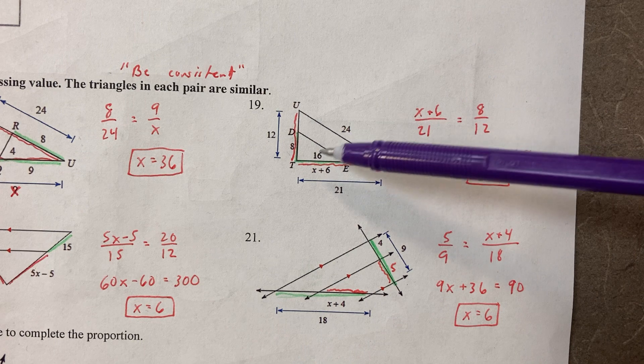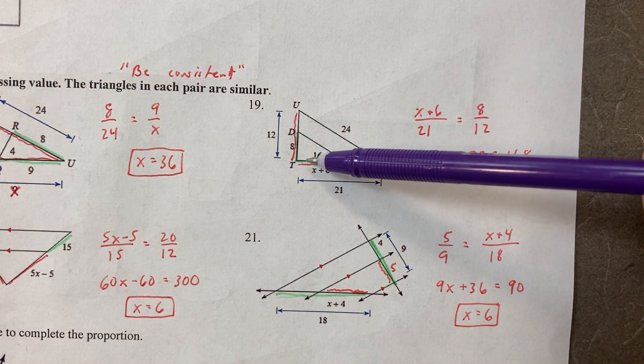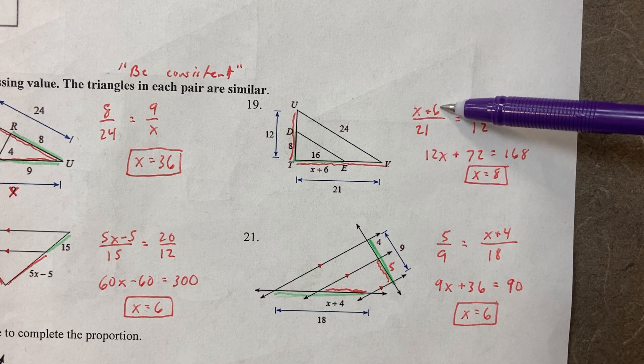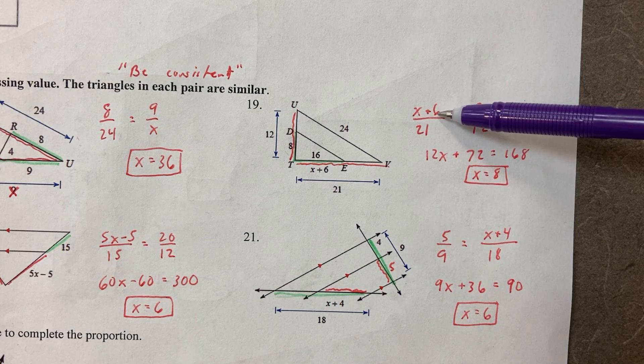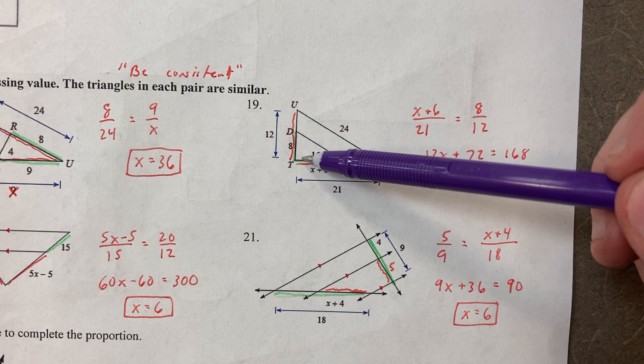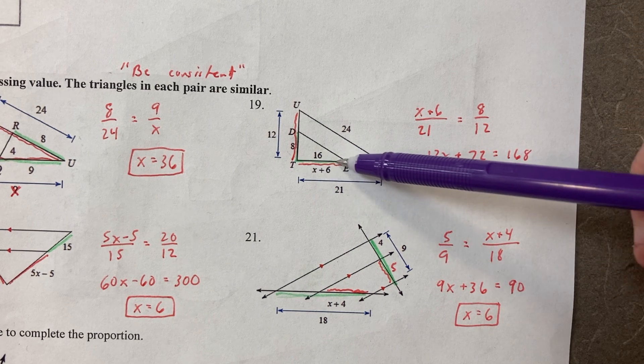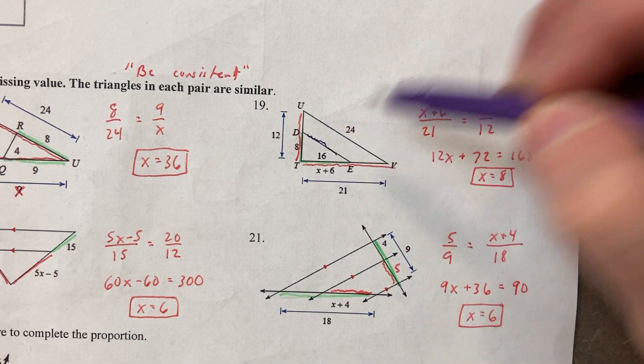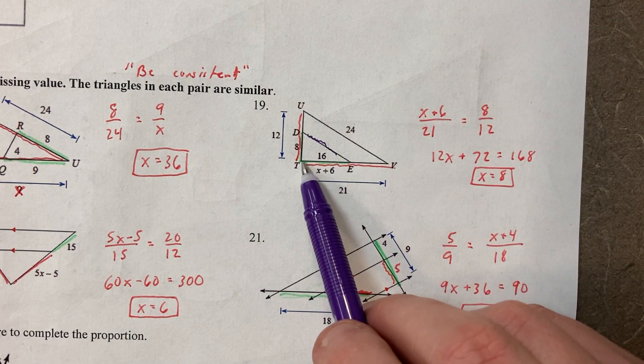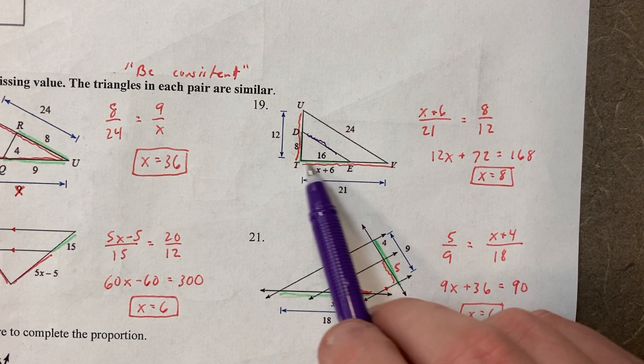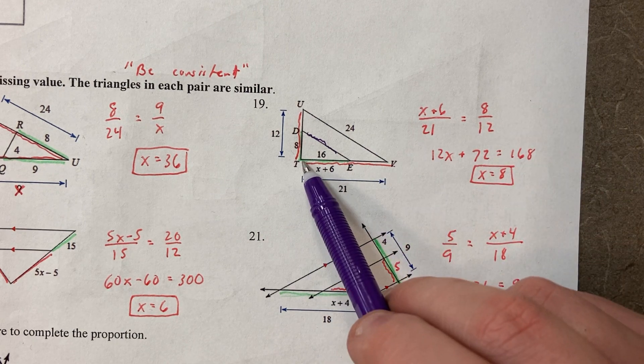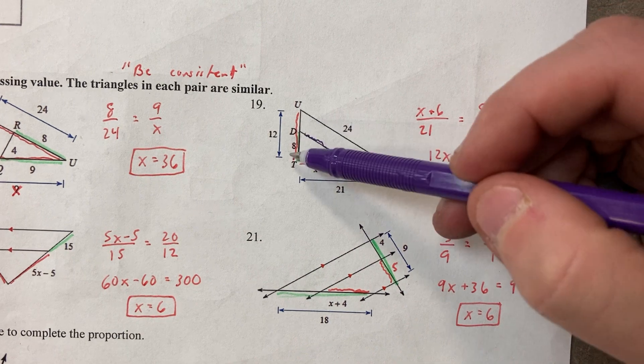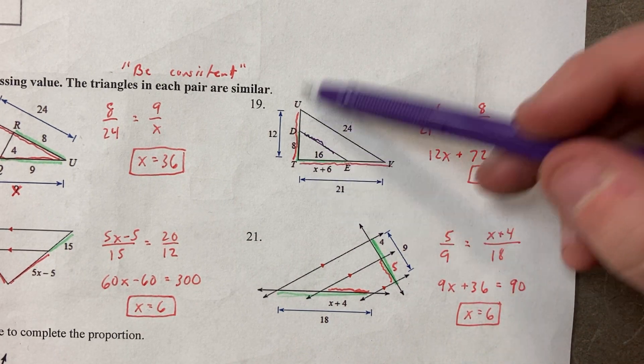So again, I went green is to red. So this little piece here. Now this 16, that's really annoying. That piece is 16. This little piece here is X plus 6. T to E. I went that one to 21. And then I did 8 is to 12. Green is to red.